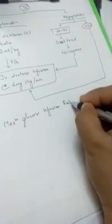If no response, then IV dextrose infusion at the rate 6 mg per kg per minute. The maximum glucose infusion rate is 15 mg per kg per minute. Now talking about the drugs used in refractory hypoglycemia.